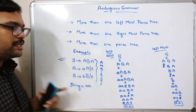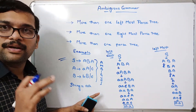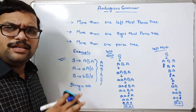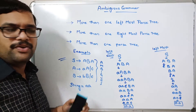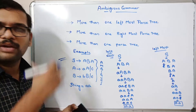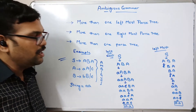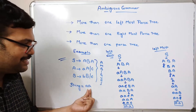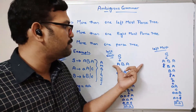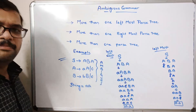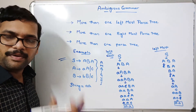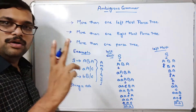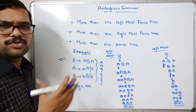This grammar is ambiguous, which means it is not suitable for compiler construction. We need to remove this ambiguity. There is no standard method to remove ambiguity — we have to rewrite the grammar. Since we have two parse trees for the leftmost derivation, this grammar is ambiguous.